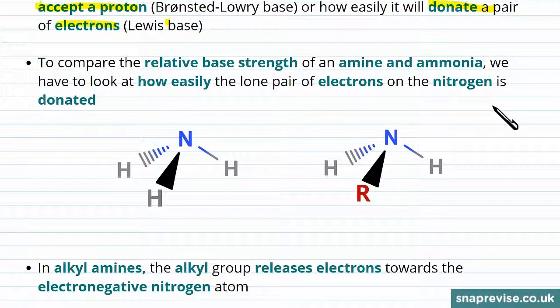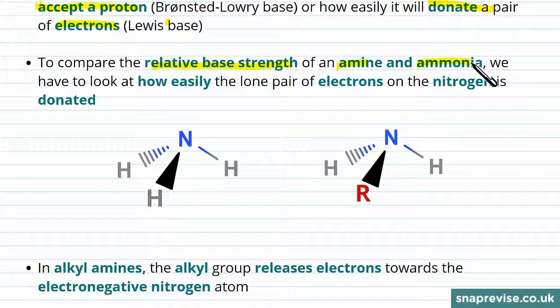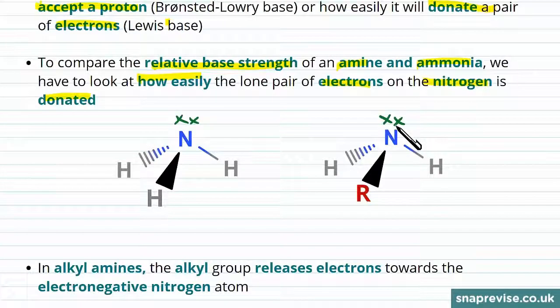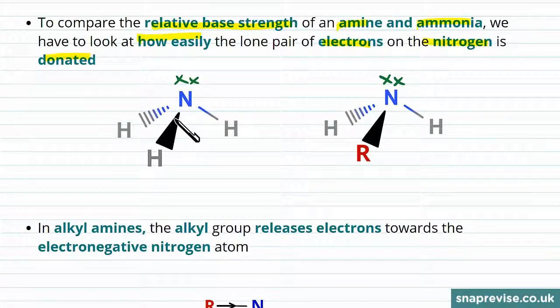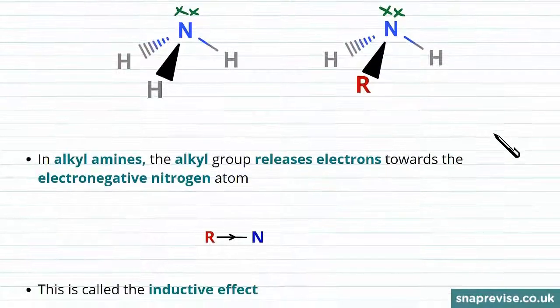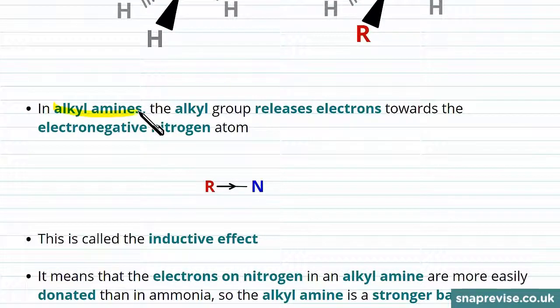To compare the relative base strength of an amine with ammonia, we have to look at how easily the lone pair of electrons on the nitrogen is donated to other compounds. So in both ammonia, shown here with the nitrogen and three hydrogens, and this amine that has an R group, we're going to have lone pairs of electrons on the nitrogen atoms. These lone pairs of electrons can be donated, and this is what makes both the ammonia and the amine act as a base.